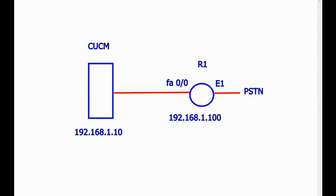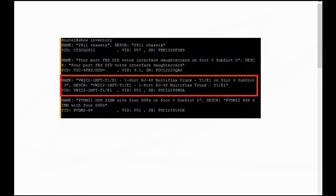In this scenario we have an E1 connection between our router and the public switched telephone network. For this connection you need a T1/E1 interface module on your router, and then you should configure it.